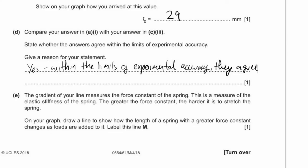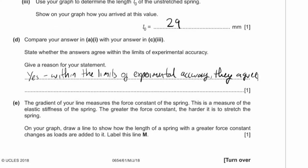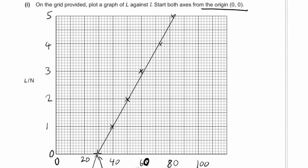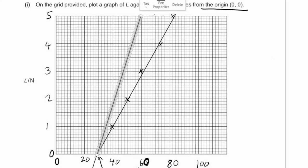E: the gradient of your line measures the force constant of the spring — a measure of its elastic stiffness. The greater the force constant, the harder it is to stretch the spring. So for the same amount of force, you get a smaller stretch, meaning the line will be steeper. Draw this steeper line and label it M.